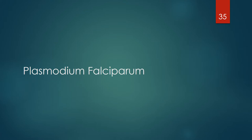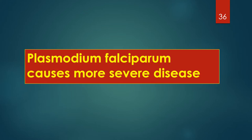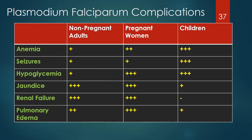Plasmodium falciparum causes more severe disease than Plasmodium vivax, ovale, and malariae. Complications vary by age and condition. Non-pregnant adults have more jaundice, renal failure, and pulmonary edema. Children experience more anemia, seizures, and hypoglycemia. Pregnant women unfortunately have essentially the worst of both groups — anemia, hypoglycemia, jaundice, renal failure, and pulmonary edema — though pregnant women have fewer seizure complications compared with children. Pregnancy and malaria is not a good combination.